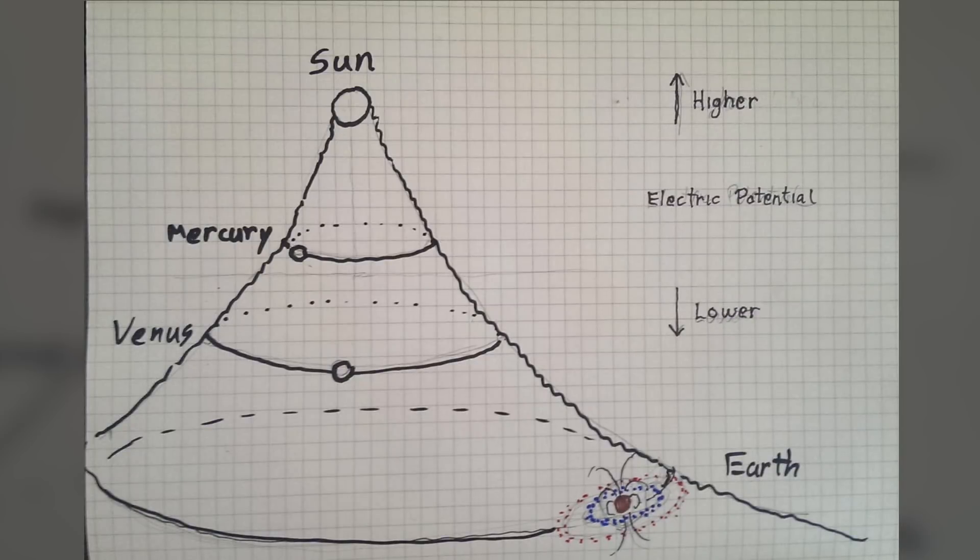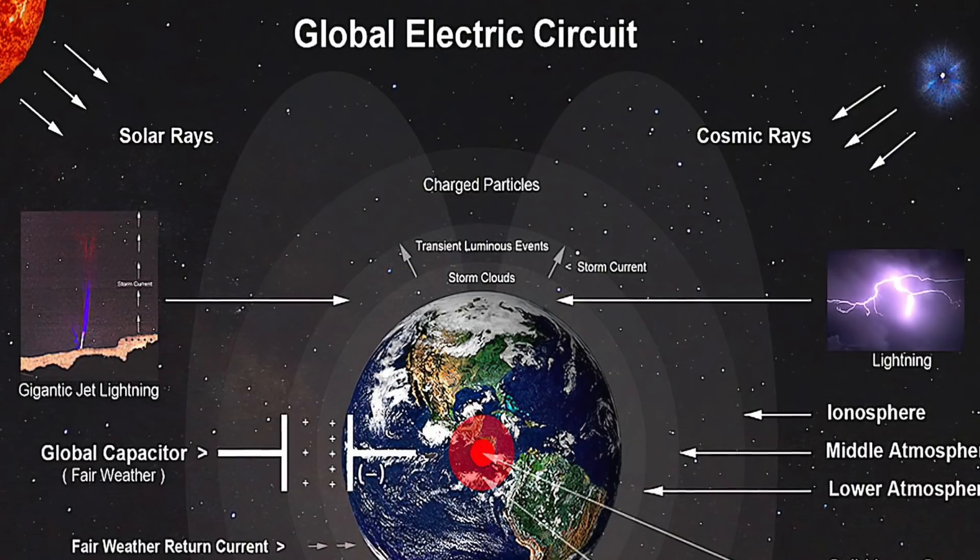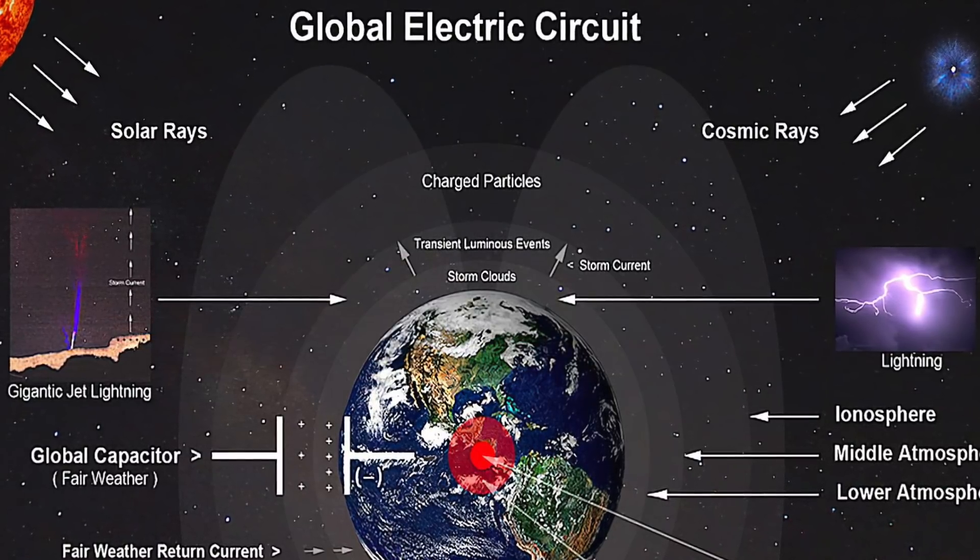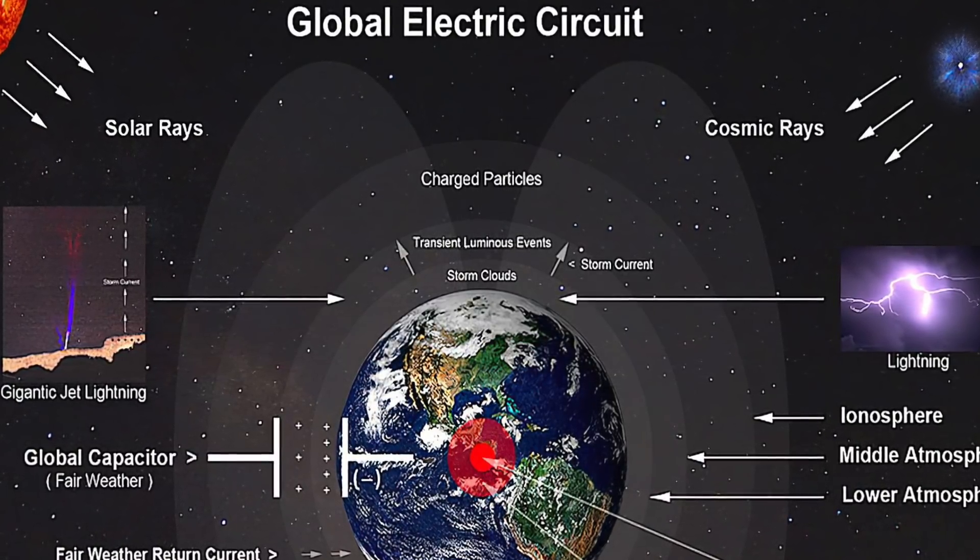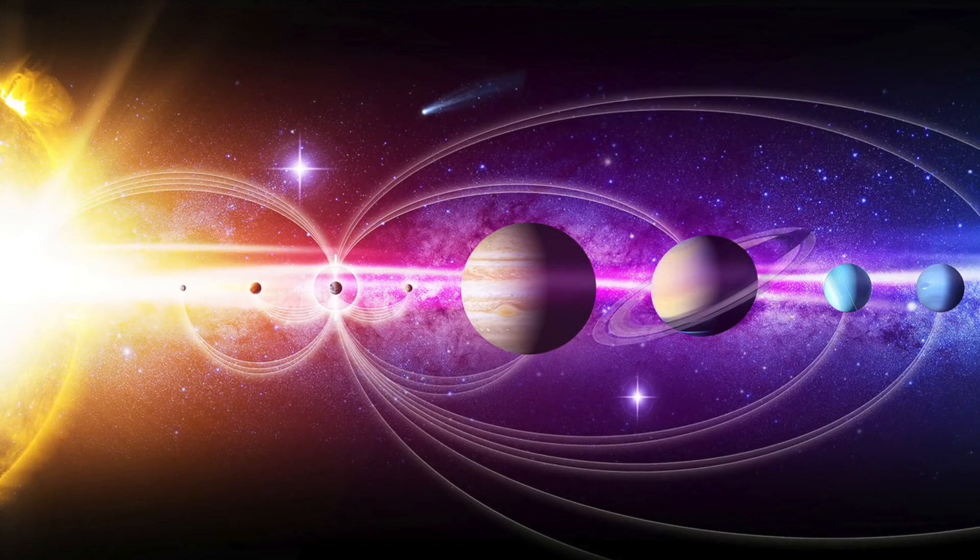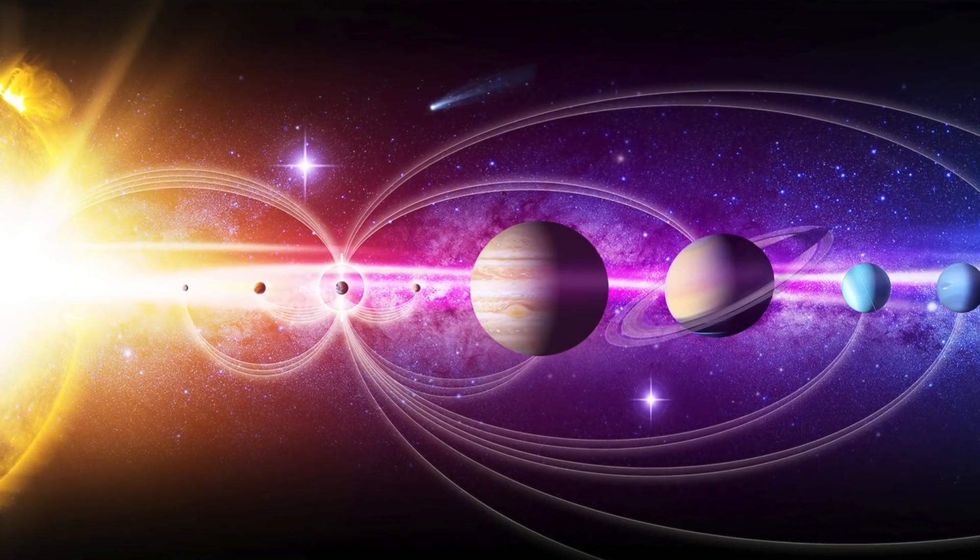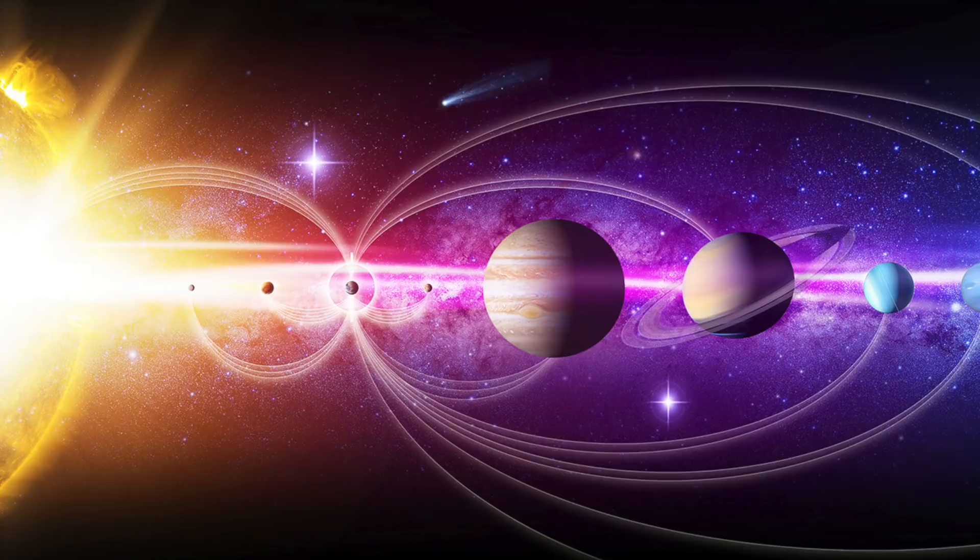Try, if you can, to remember all the electrical activity around the earth. The lightning strikes, the sprites and the jets, the Van Allen belts. All this exists in the larger electrical body of the sun.